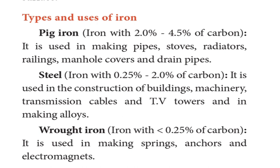Types and uses of iron: Cast iron contains 2–4.5% carbon and is used for making pipes, stoves, radiators, railings, manhole covers, and drain pipes. Steel contains 0.25–2% carbon and is used in construction of buildings, machinery, transmission cables, TV towers, and making alloys. Wrought iron contains less than 0.25% carbon and is used for making springs, anchors, and electromagnets. Pig iron and wrought iron are important topics for exam questions.